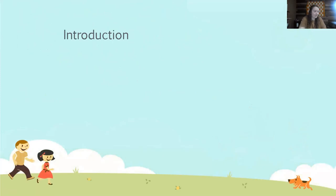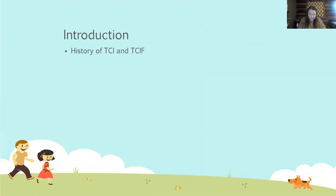Just a quick introduction — the history of TCI and TCIF. TCI was developed by Cornell University in the early 1980s. TCI is a crisis prevention and intervention model for residential child care agencies. It assists organizations in preventing crises from occurring, de-escalating potential crises, managing acute physical behavior, reducing potential and actual injury, teaching positive coping strategies, and helping create learning organizations.